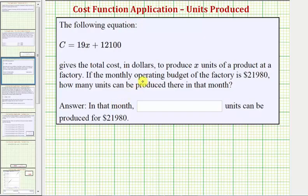To answer this question, because the operating budget is $21,980, if we set C, the total cost, equal to $21,980 and solve for x, we can determine how many units can be produced in that month.